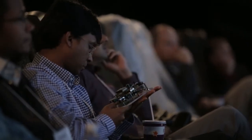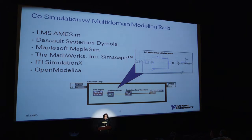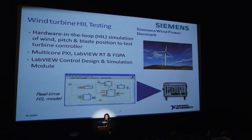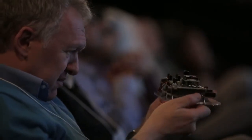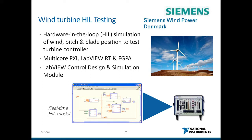With the control design and simulation module, we have a block similar to the S-function in Simulink called the external model interface block. Several companies have either worked on integrating their modeling environments into this through C code, or we've done that for them. Right now I'm working on integrating OpenModelica. If you want to add your name to this list, just let me know. This shows a case study with Siemens using our PXI hardware, with a top-level model of the control design and simulation module — but this could be a model from any design environment, or a combination of design environments, running on the real-time controller.